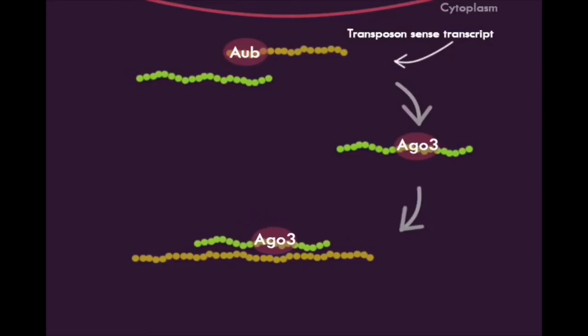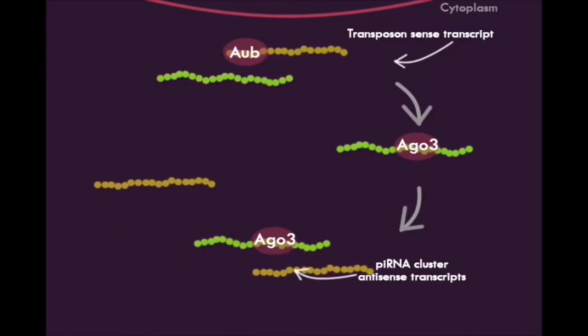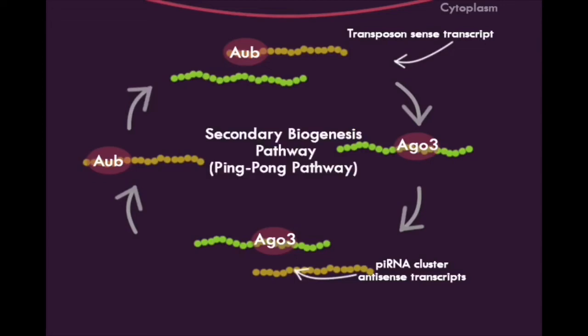These Argonaute 3-associated PI-RNAs can now target PI-RNA cluster antisense transcripts, allowing them to be sliced. These sliced PI-RNA transcripts can now bind to Aubergine to target antisense PI-RNAs and begin the secondary biogenesis pathway again.